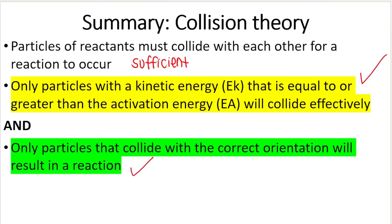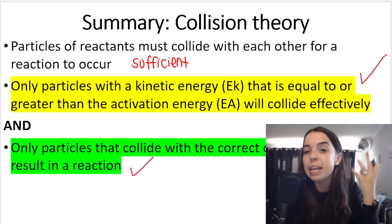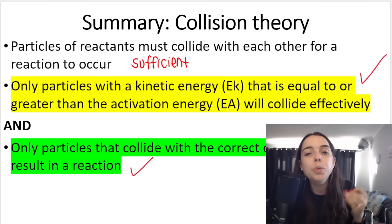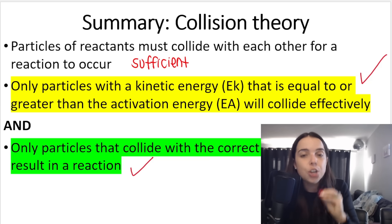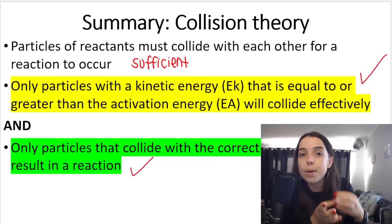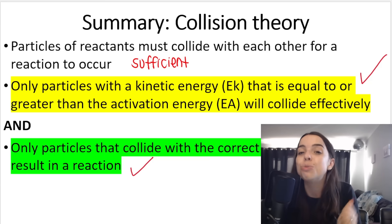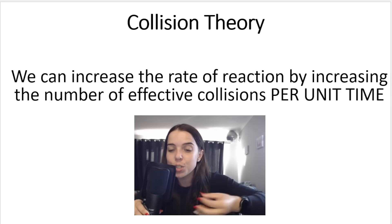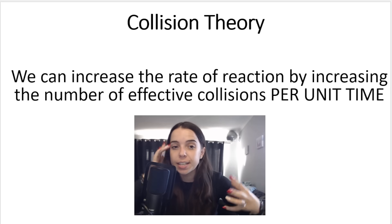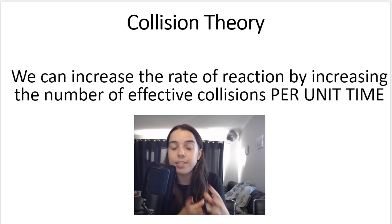Remember what I said in the previous lesson — it's all about increasing the rate of the reaction, having reactions happen as fast as possible. So how do we increase the rate of reaction? We need effective collisions. If we can increase the number of effective collisions that happen in a space of time, then we can increase the rate of reaction — increasing the number of effective collisions per unit time.